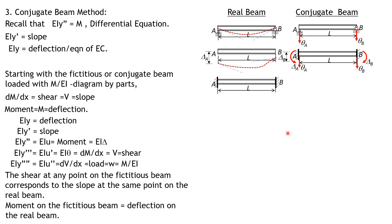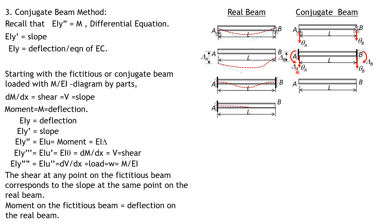For the case fixed at A and fixed at B, there is no rotation and no deflection at either end in the real beam, so the conjugate beam should be free at both A and B — no shear and no moment at those points. For the case fixed at A and free at B: zero rotation and zero displacement at A means it should be free in the conjugate beam. There is rotation and deflection at B, so B should be fixed in the conjugate beam.